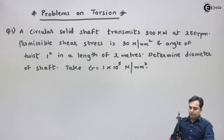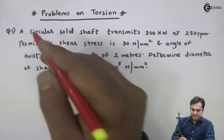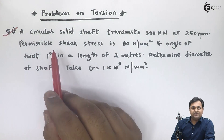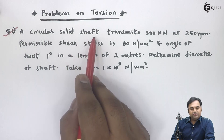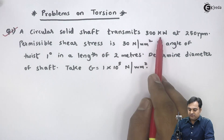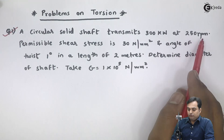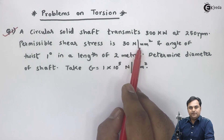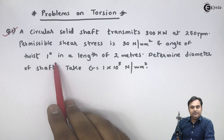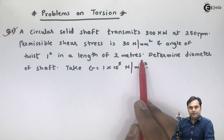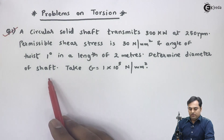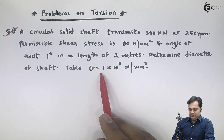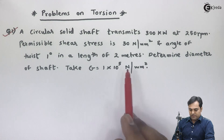Let us solve some problems on torsion. A circular solid steel shaft transmits 300 kilowatts at 250 rpm. The permissible shear stress is 30 Newton per mm² and the angle of twist is one degree in a length of two meters. Determine the diameter of the shaft. Take G, the modulus of rigidity, equal to 1×10⁵ Newton per mm².